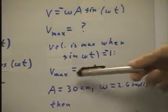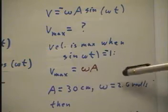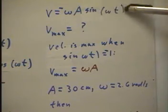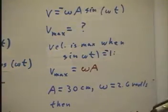So when sine omega t equals negative 1, the velocity is omega a, and the absolute value of the sine can't be bigger than 1, so this thing can't ever be bigger than omega a.